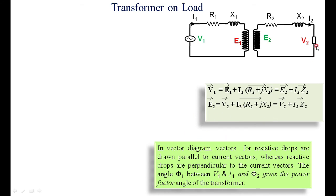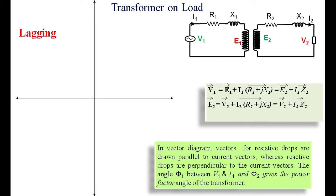Now suppose we are connecting a lagging power factor load — how to draw the vector diagram, step by step. First, draw the reference x and y axes. Start with the flux phi. When current I0 flows, it creates a magnetic flux, and because of this flux linking both primary and secondary, voltages E1 and E2 are induced in the primary and secondary windings respectively.